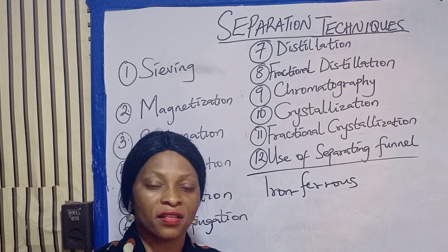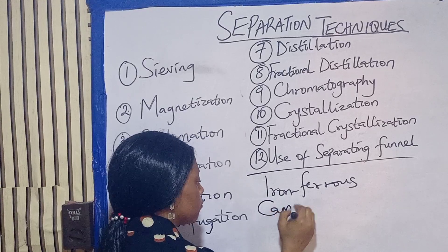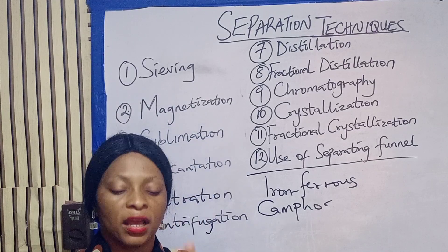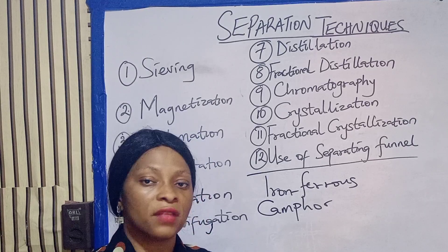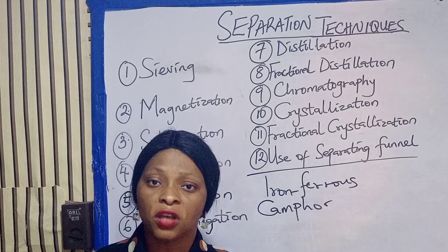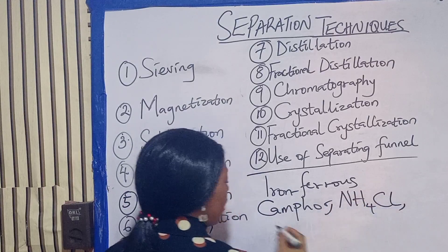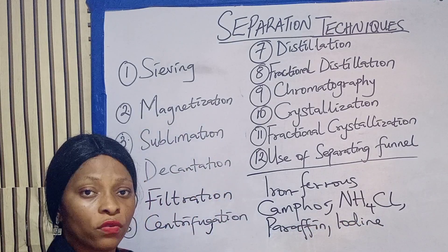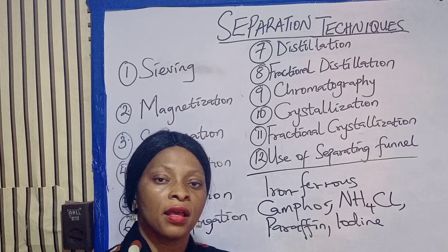Next is sublimation. Sublimation is used to separate substances that move from solid phase to gaseous phase without passing through the liquid phase. For example, the camphor you use in your clothes — you buy it as a solid, put it in your clothes, and after one month it has reduced without your cloth becoming wet, because it moves from solid to gaseous phase directly. Other examples include solid air fresheners in toilets and, in chemistry, ammonium chloride, paraffin, and iodine — all examples of substances that sublime.